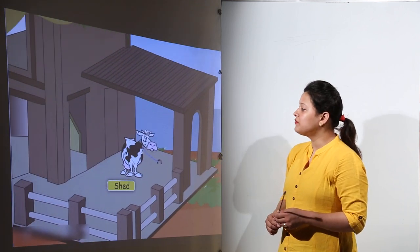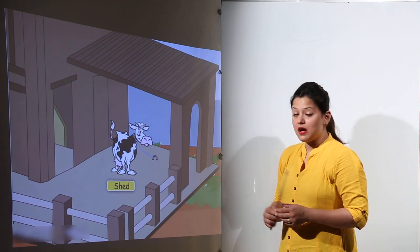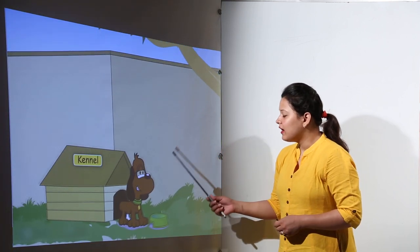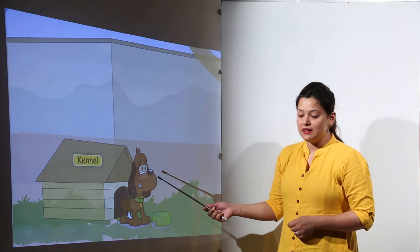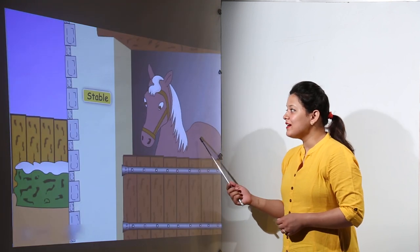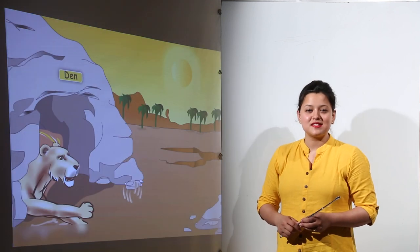So there are different types of animals like cows that live in sheds. A dog lives in a kennel. We can see a horse living inside a stable.